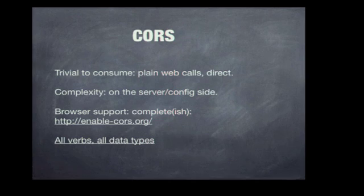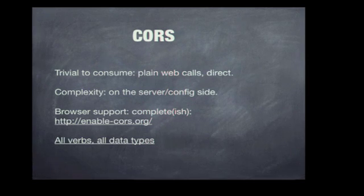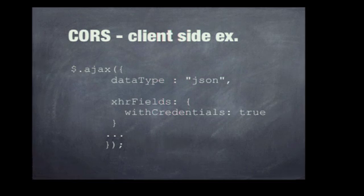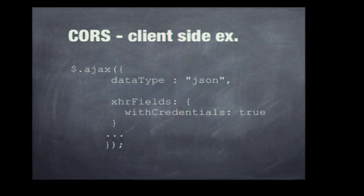They're just plain old web calls direct from any type of JavaScript you like. The only gotchas I came across were on the server and config side. Browser support is fairly complete — Enable-CORS.org can tell you all about that. All HTTP verbs — POST, GET and all that — are supported, which is great. On the client side, it's just a plain old call as if it's to the origin. I've noted the XHR withCredentials field here — just in case it saves someone a day. I do a lot of single sign-on apps with OAuth or OpenID, and I spent a day figuring out why credentials and cookies weren't passing to my CORS-enabled endpoint. It's because I needed to turn that on.